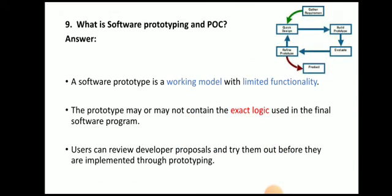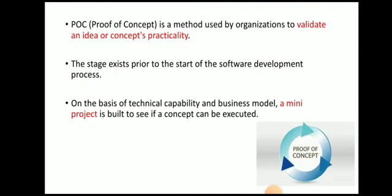What is software prototyping and POC? A software prototype is a working model with limited functionality. The prototype may or may not contain the exact logic used in the final software program. Users can review developer proposals and try them out before implementation. Proof of concept (POC) is a method used by organizations to validate an idea or concept practically. A mini project is built on the basis of technical capability and business model to see if the concept can be executed.